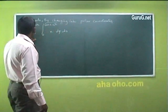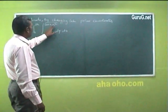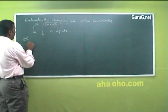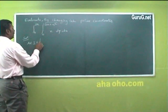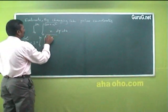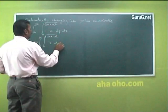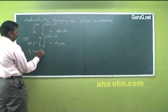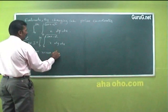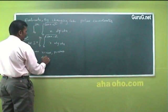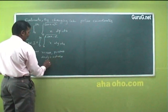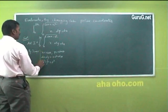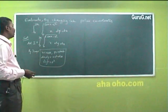Now evaluate the integral from 0 to 2a, integral from 0 to √(2ax − x²), of x dy dx, by changing into polar coordinates. By transformation: x equals r cos theta, y equals r sin theta, dx dy equals r dr dθ, and x² plus y² equals r².